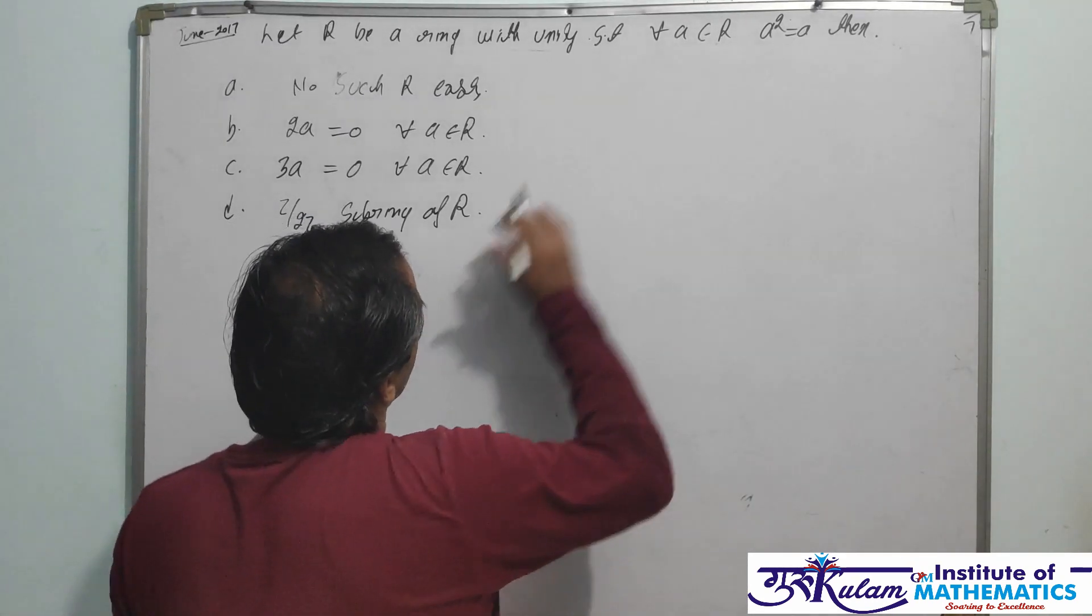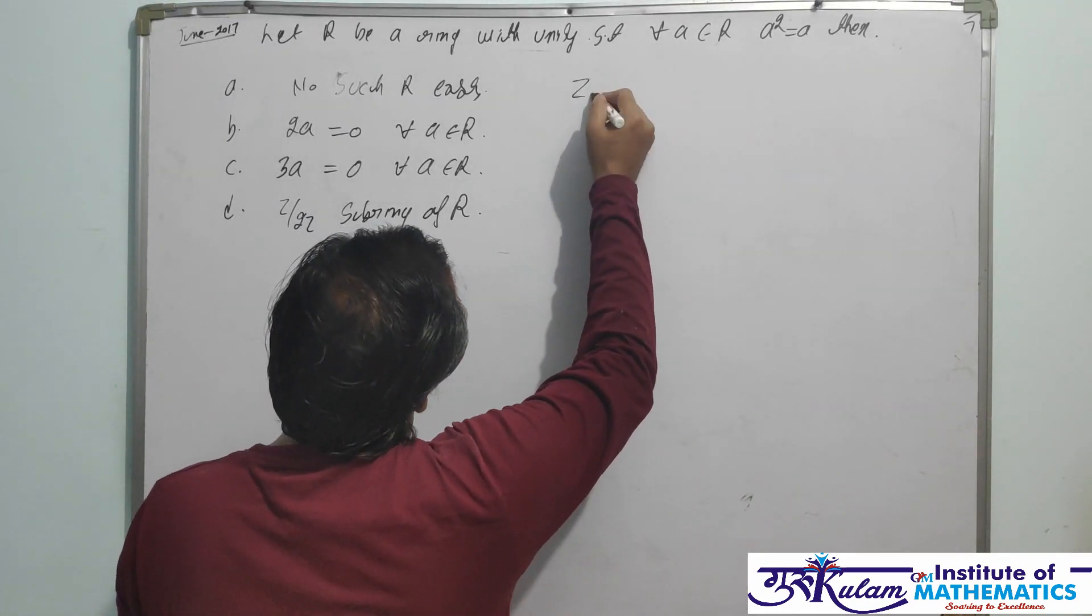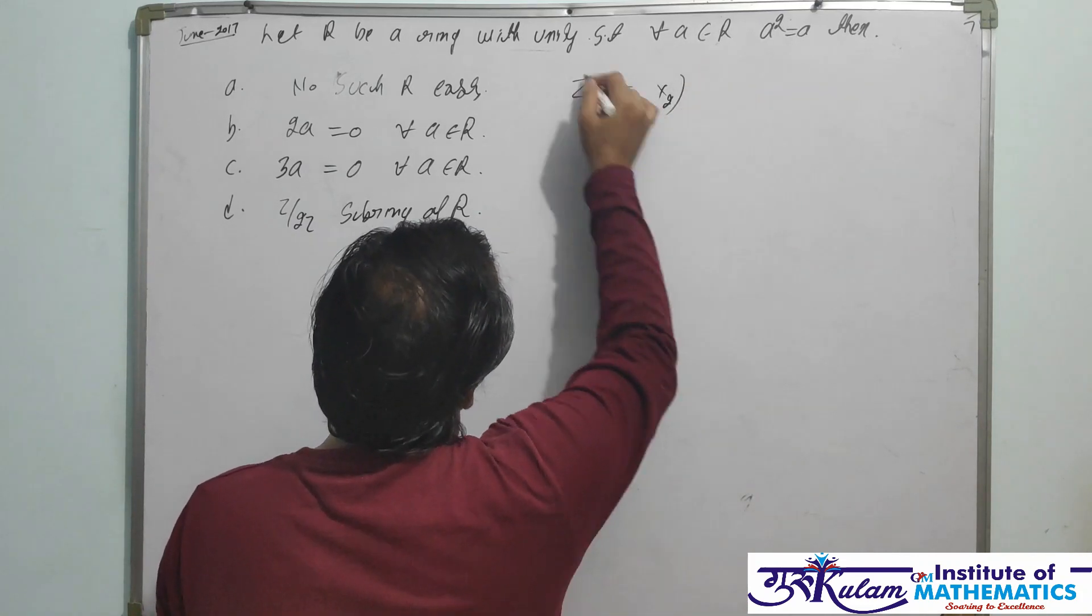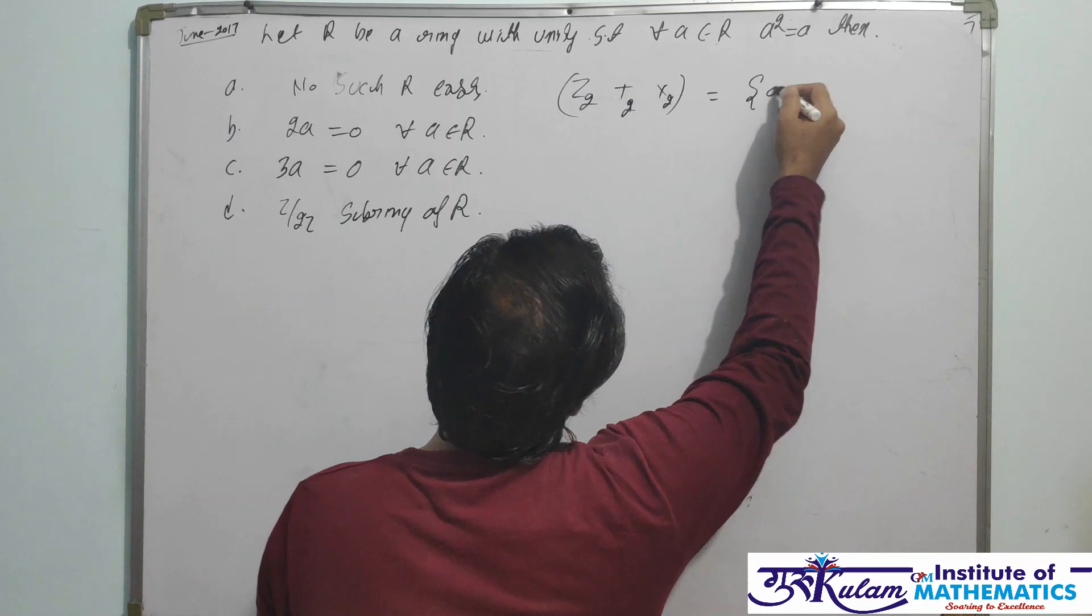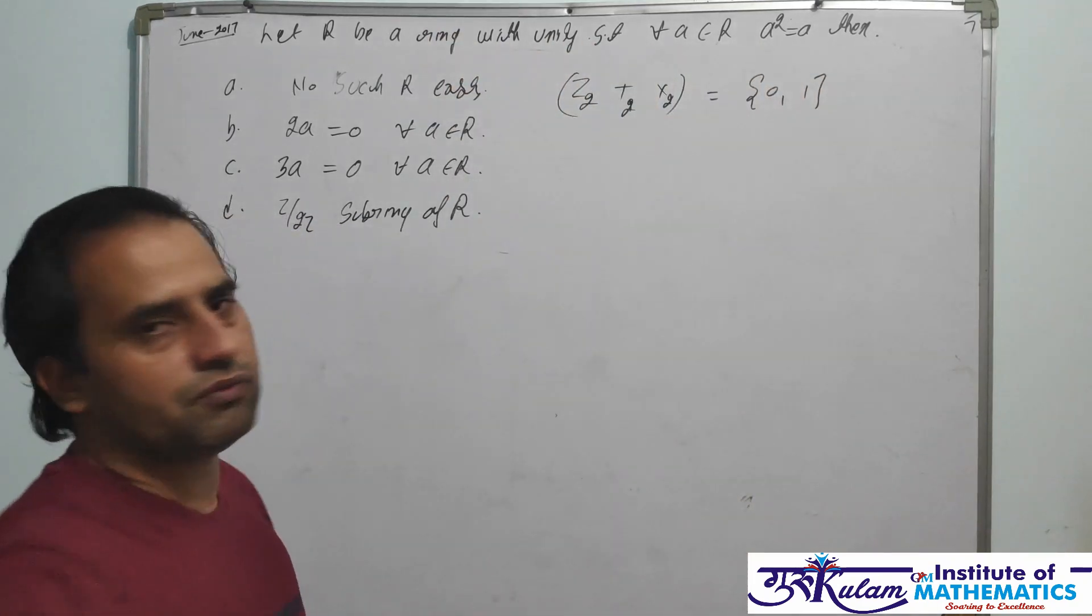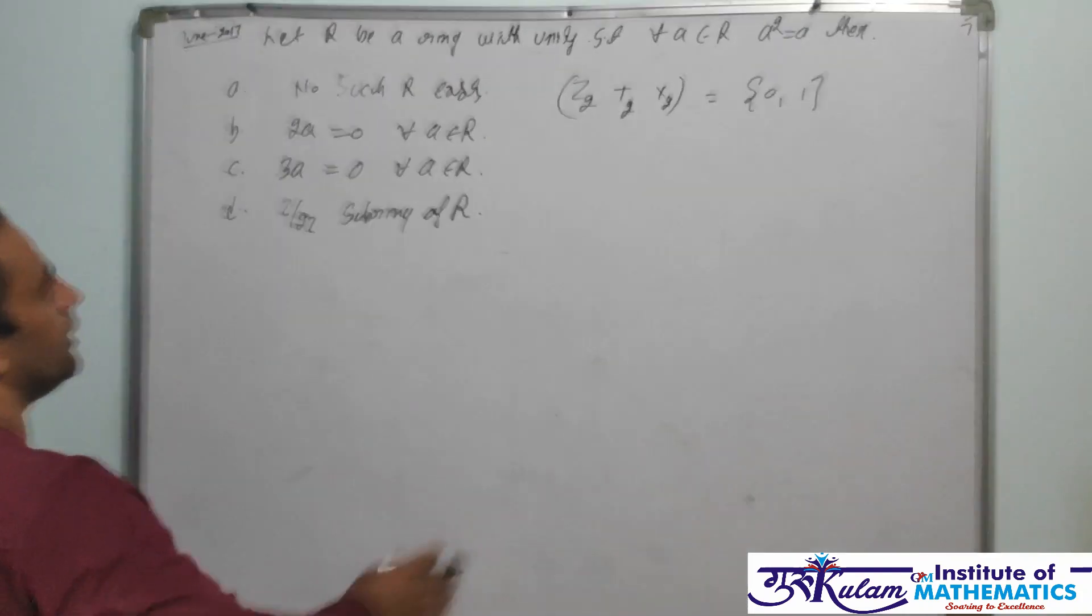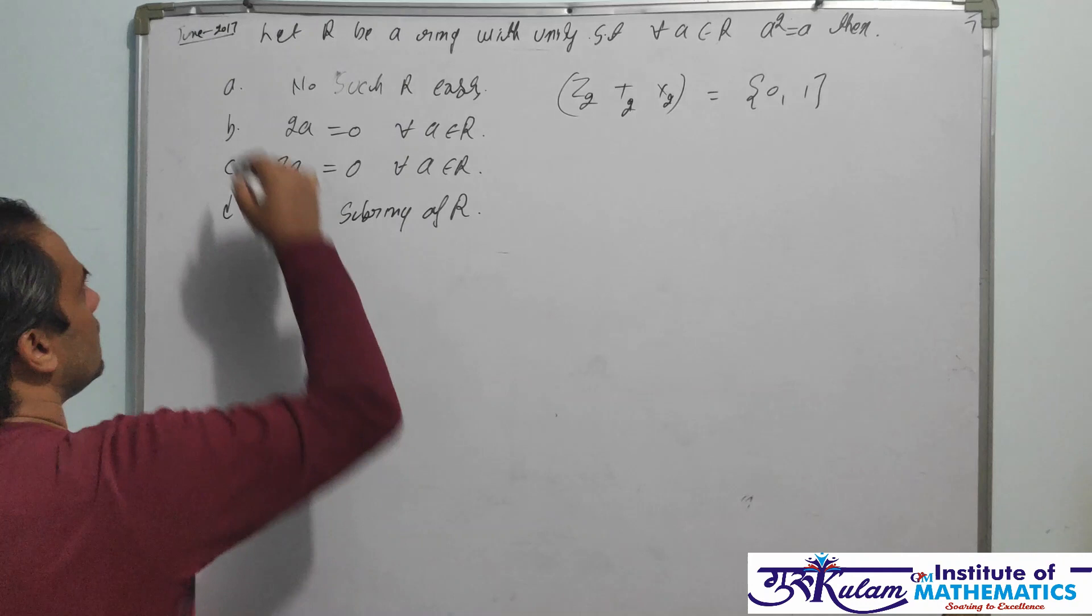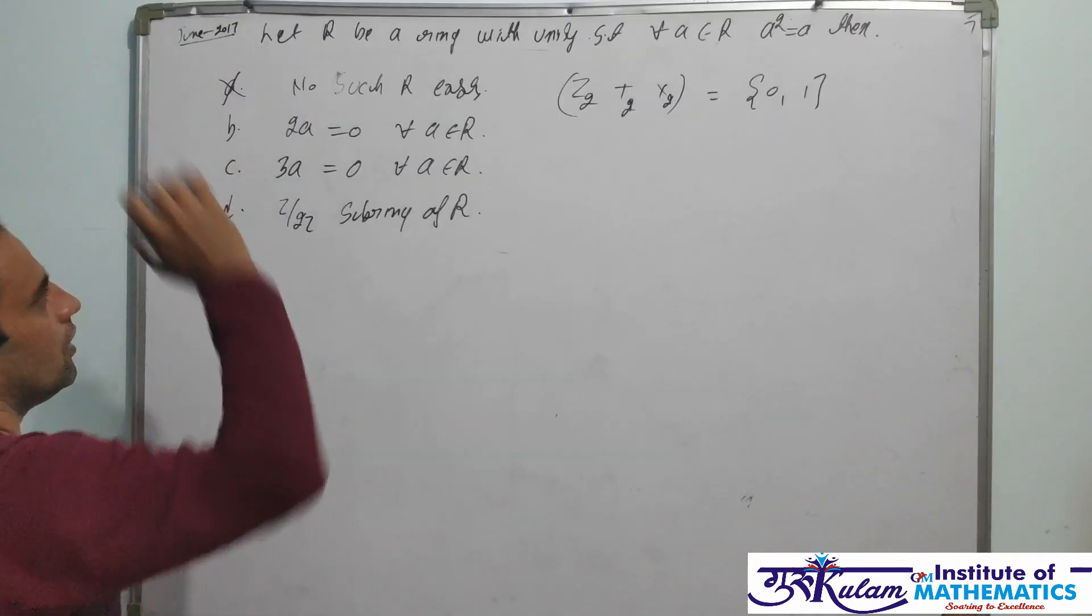Simply if we take Z2 under addition modulo 2 and multiplication modulo 2, we have only two elements 0 and 1. Both 0 and 1 are idempotent and this ring is with unity. So there must exist a ring in which every element is idempotent. Your first option is definitely false.